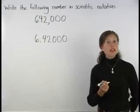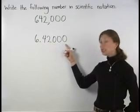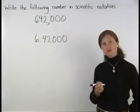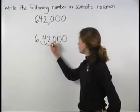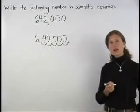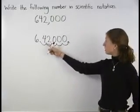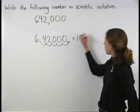Next, we count the number of places the decimal point would need to move to get back to the original number, 642,000. Since we would need to move the decimal point 1, 2, 3, 4, 5 places to the right, we have an exponent of positive 5. So we have 6.42000 times 10 to the 5th power.